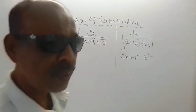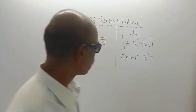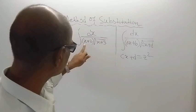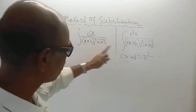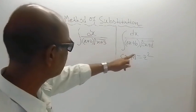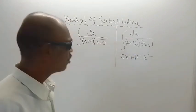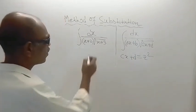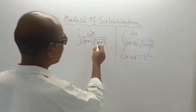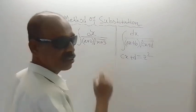Whatever be the values of a, b, c, d. So here you can see that in the given problem, a is 1, b is 2, c is 1, d is 3. So here also we will do the same thing to solve the given problem. So let us take x plus 3 is equal to z square.